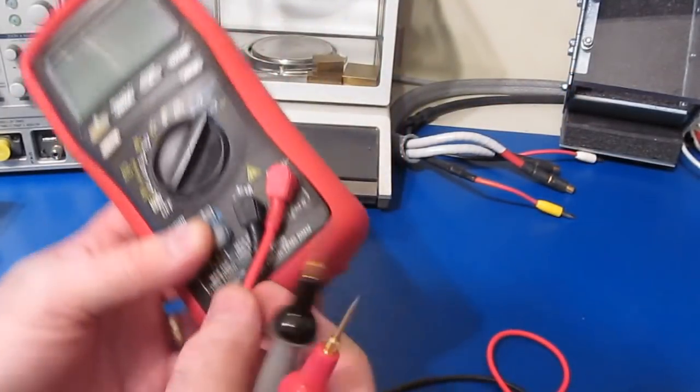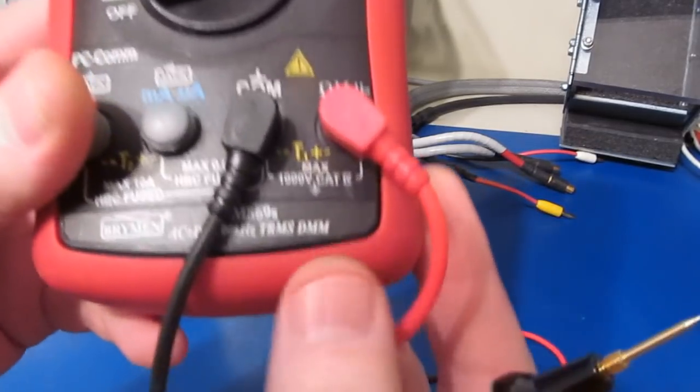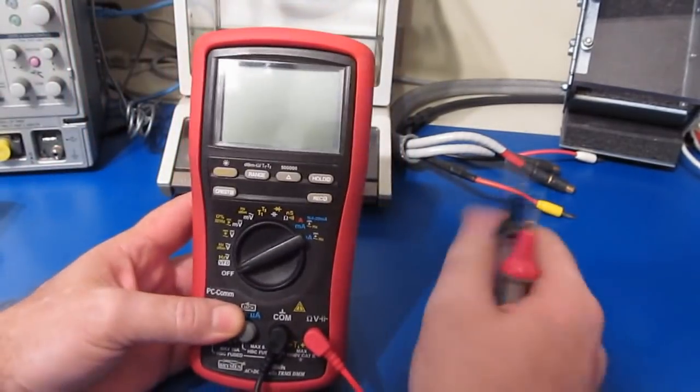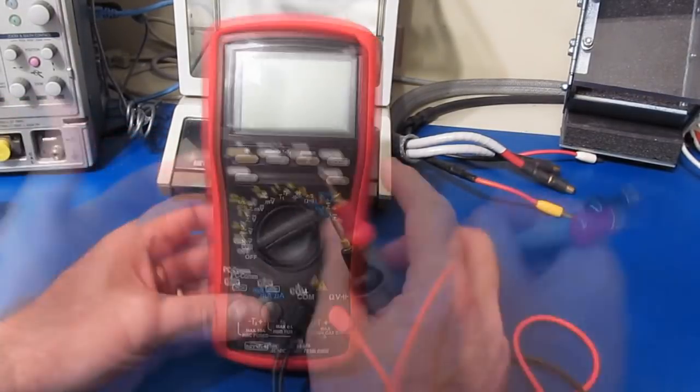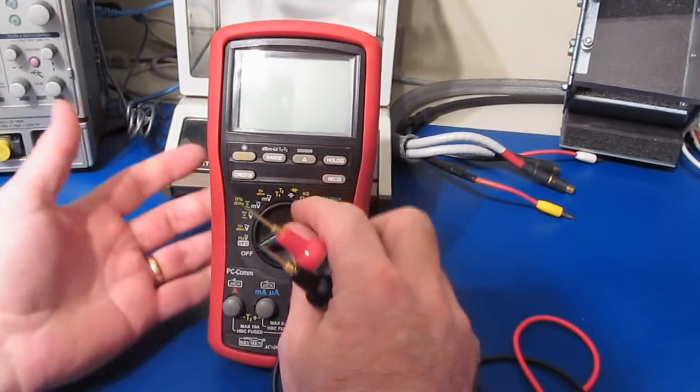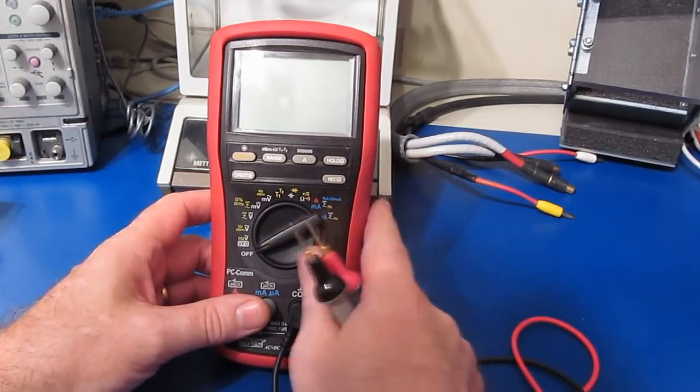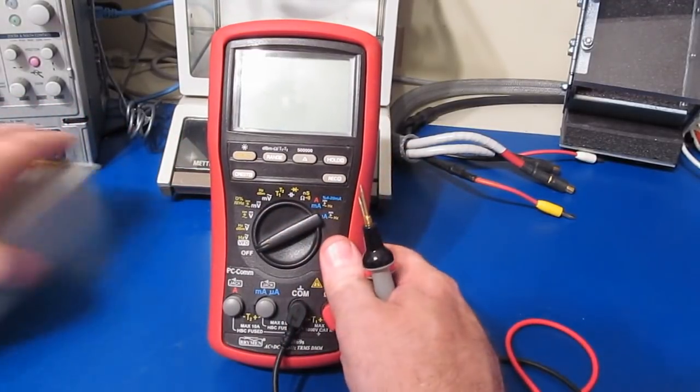The obvious one would just be to use a voltmeter. Of course, this meter is only rated for a thousand volts DC maximum. You may get away with putting 1200, 1300 volts into a meter like this, but once you exceed that you run the risk of damaging the meter.